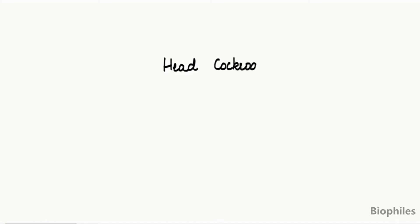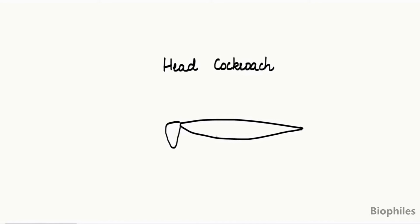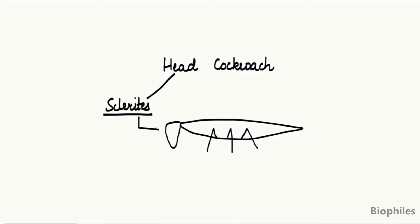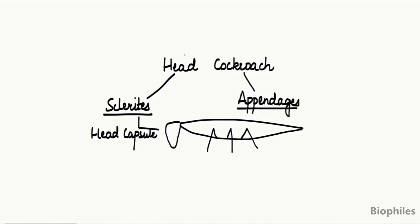In this video we are going to discuss the structure of the head of Periplaneta americana, or the American cockroach. The head of the cockroach is the first division of the body and it is made up of tiny plates called sclerites. These sclerites together form the head capsule, and on this head capsule several appendages are present. We are going to talk about the sclerites and the different appendages present on the head.